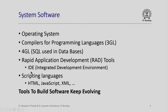There are several such integrated development environments which make development of software easier. Then there are scripting languages and their interpreters, such as HTML, JavaScript, XML, etc. Tools to build software keep evolving, and all such tools which help us build other kinds of software, and those which manage the computer systems, together are referred to as system software.